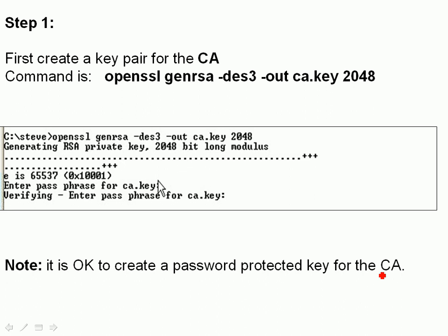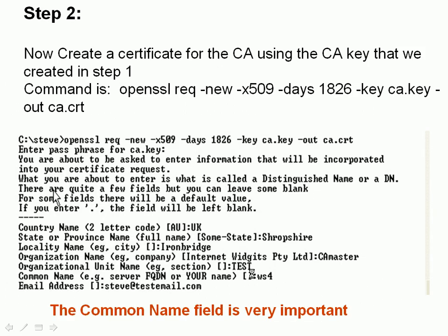The first step is to create a key pair for the certificate authority — remember, we're going to be the certificate authority. There is a command here to do it, and there's also a written tutorial on the site which you may find easier to follow when actually setting it up. It's okay to password-protect this particular CA key. Step two: we create a certificate for the CA using the key we just created, and there's the command here.